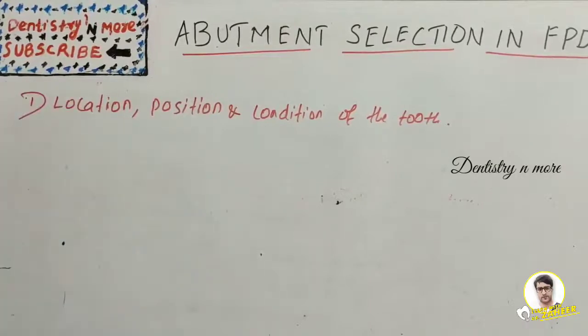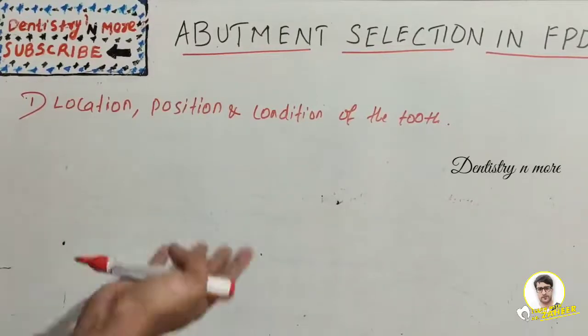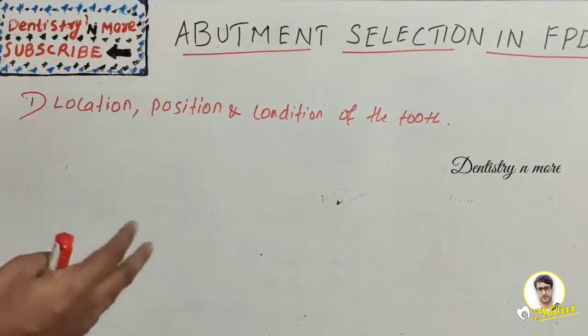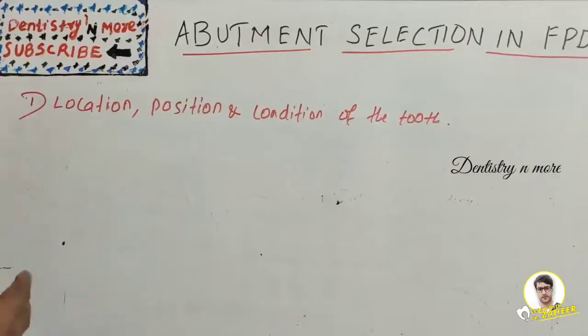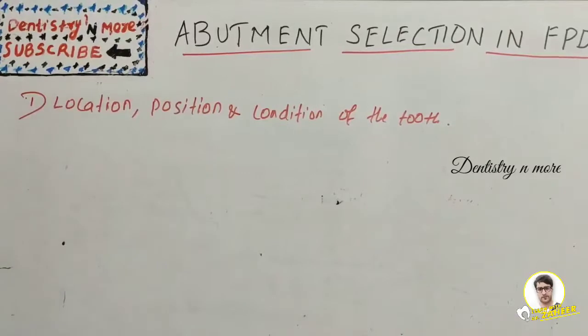Teeth that can be selected for an abutment in FPD are teeth near the edentulous space, teeth with grossly decayed crowns that can be restored with full veneer crowns, or dowel core or pin-retained amalgam restorations. Mostly vital teeth are preferred, though we can use teeth with root canal therapy, but never use a tooth with pulp capping because they are always under risk of root canal treatment.